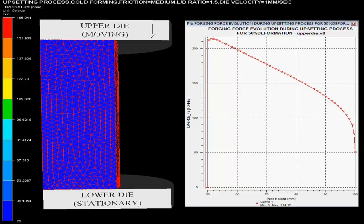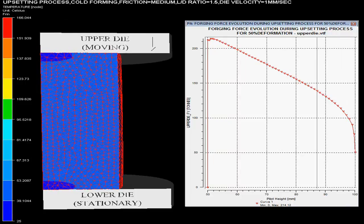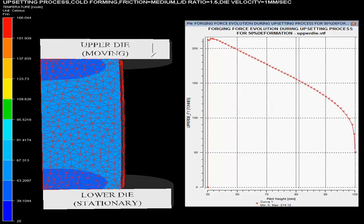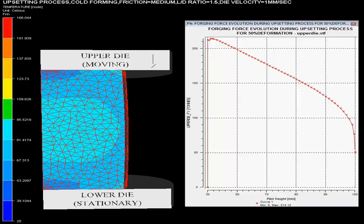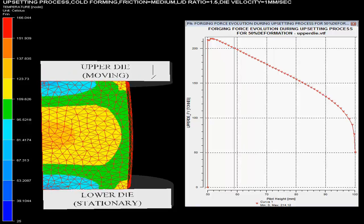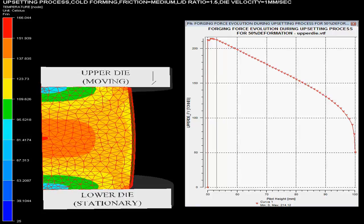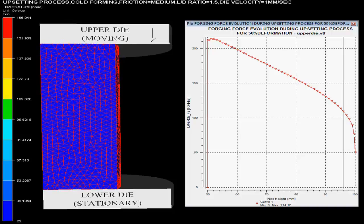In this finite element simulation video, one can see upsetting process simulation for titanium. Here, one can observe that forging process requires two dies, one bottom and one upper die. Bottom die is rigid and it is not moving. On the other hand, upper die is moving in downward direction.